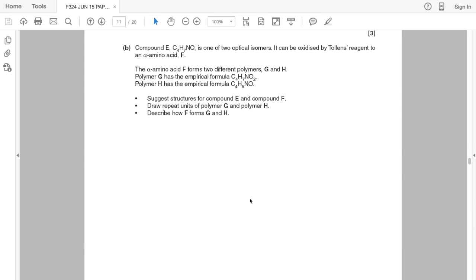Part B moves on to compound E. We're told that it has this molecular formula and that it's one of two optical isomers, it can be oxidized by tollens to form an alpha amino acid F. The alpha amino acid forms two different polymers G and H and we're given the empirical formula of the two polymers. So we've got to suggest structures for compounds E and F, draw repeat units for polymer G and polymer H, and describe how F forms G and H.